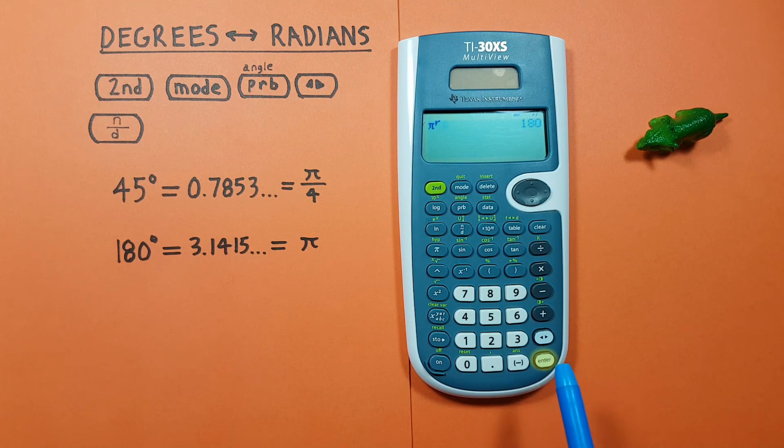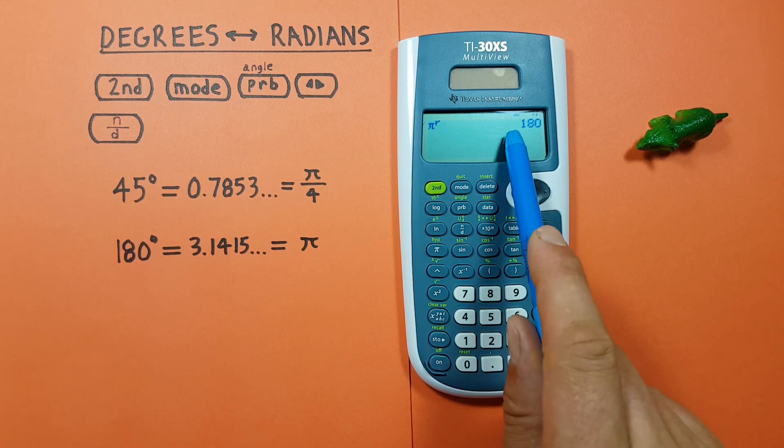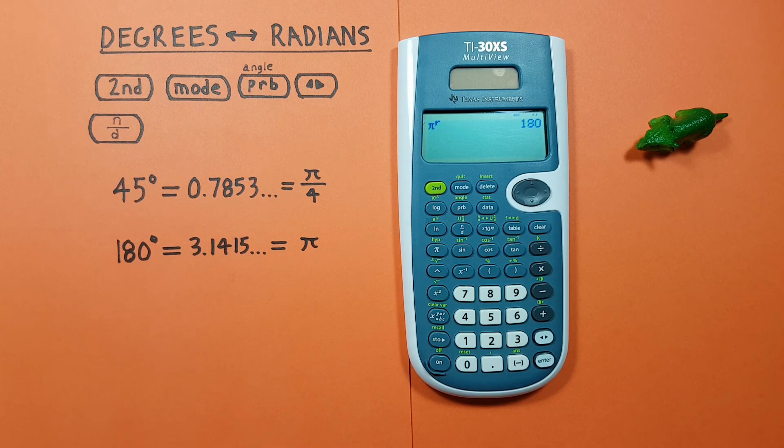Pi radians, and press enter, and see that we get 180 degrees, which is correct. All right, I hope this helps, and good luck on those tests out there, everybody.